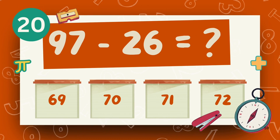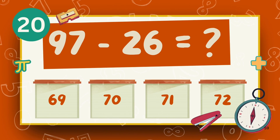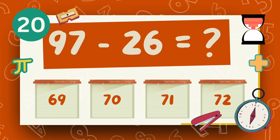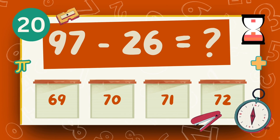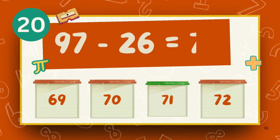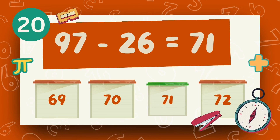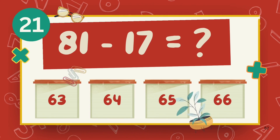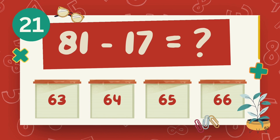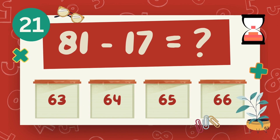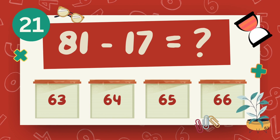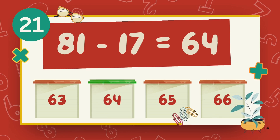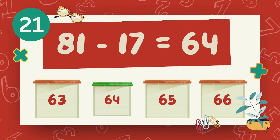What is 97 minus 26? The answer is 71. What is 81 minus 17? The answer is 64.